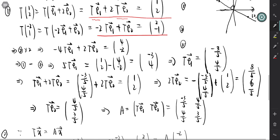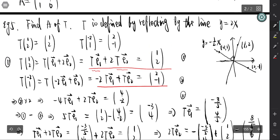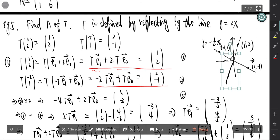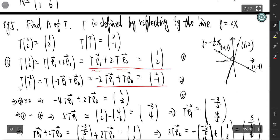The most difficult part for this type of problem is how to find the two key points, since we cannot use e₁ and e₂ directly. First, we find the point on the line that does not change, and the point on its normal line whose coordinates change sign. That concludes the material on linear transformation.